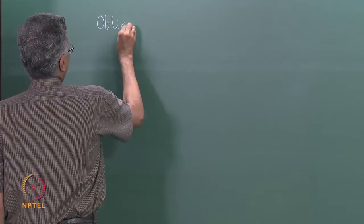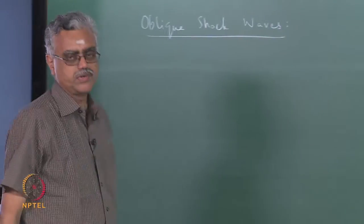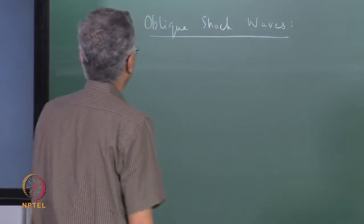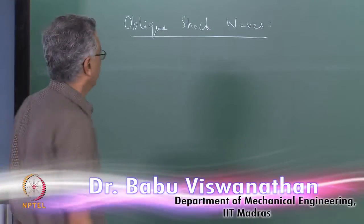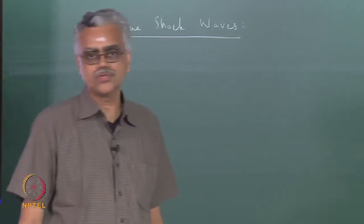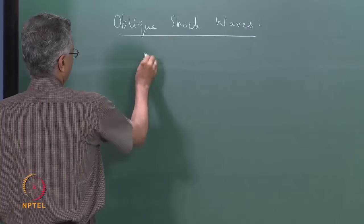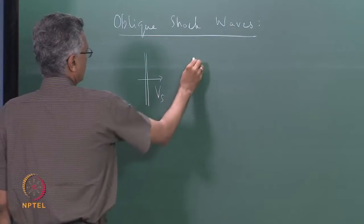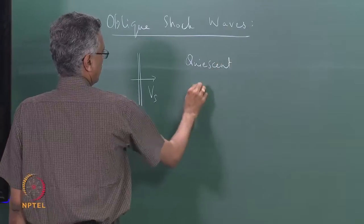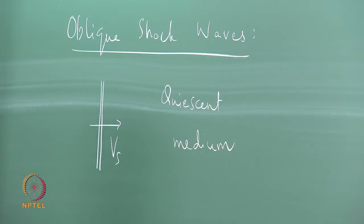We begin a new chapter on oblique shockwaves. We will start with a recap of normal shockwaves and then see how an oblique shockwave differs. Recall that we started our discussion on normal shockwaves by considering a situation where a normal shock propagated with a velocity Vs into a quiescent medium — this was in a frame of reference where the observer is stationary.